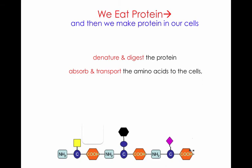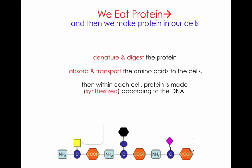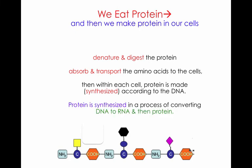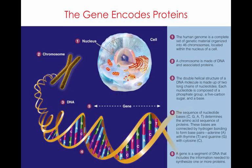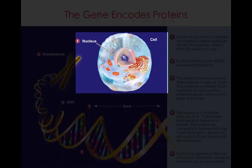After the protein has been denatured and digested, and after the amino acids have been absorbed and transported to the cells, what happens is that within each cell a new protein is made, or synthesized, according to the program in the DNA in the nucleus of the cell. This protein is synthesized in a process of converting DNA into RNA, and then into protein. It's the genes inside the chromosomes of our cell that tell the body what type of proteins to make. The human genome is a complete set of genetic material organized into 46 chromosomes located within the nucleus of the cell.